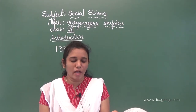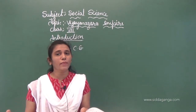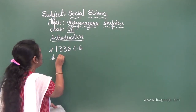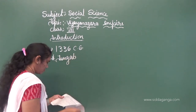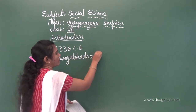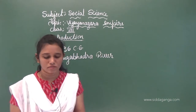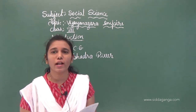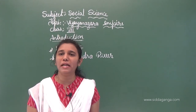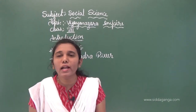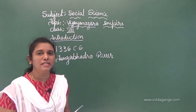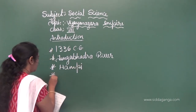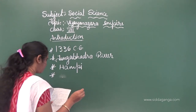It is situated on the southern bank of the Tungabhadra River. Their capital was Hampi, in Ballari district. Their national emblem was Varaha, also called Bor.